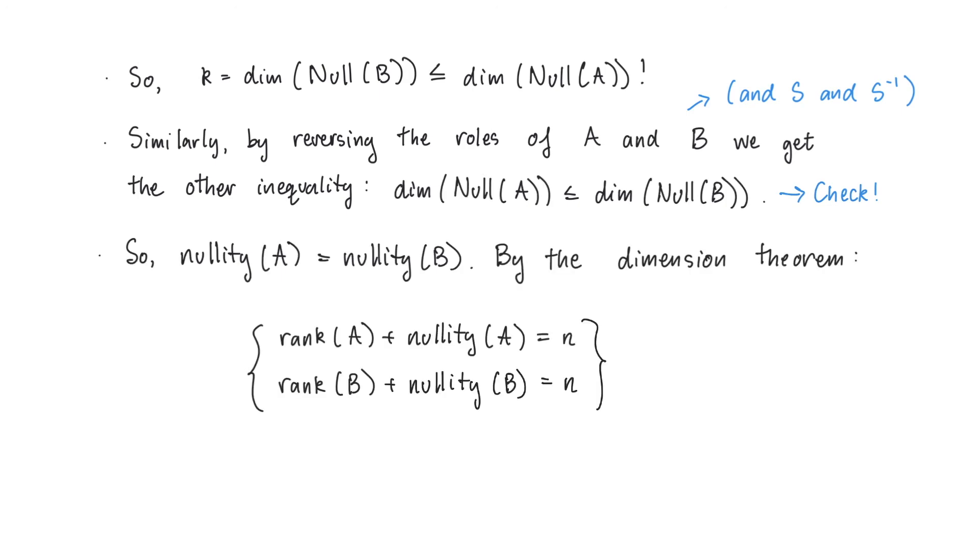By the dimension theorem, we know that the rank of A plus the nullity of A is equal to N, since A is an N by N matrix, and that the rank of B plus the nullity of B is also equal to N, since B is also an N by N matrix. So, the rank of A is equal to N minus the nullity of A, which is equal to N minus the nullity of B, which is equal to the rank of B. This completes the proof.